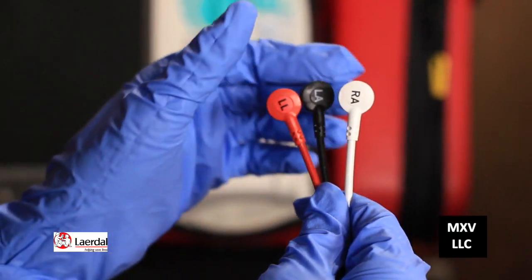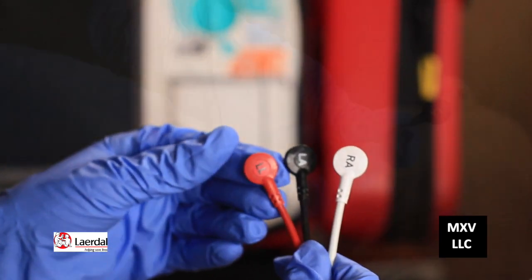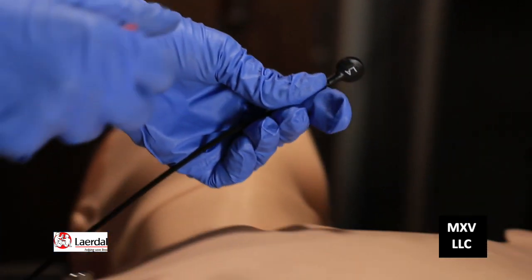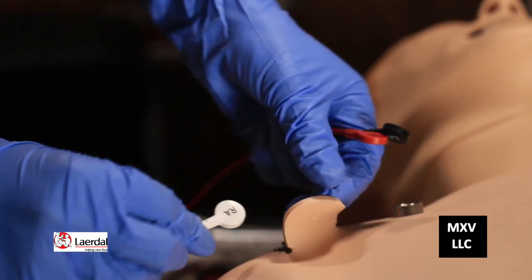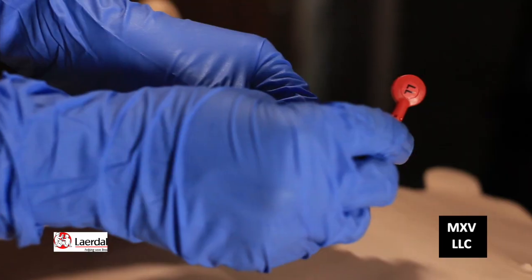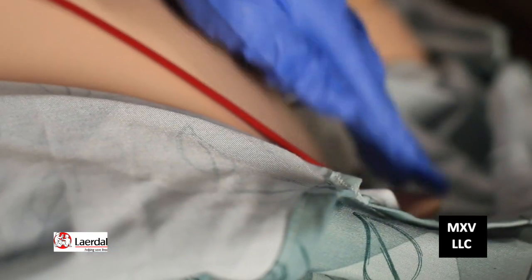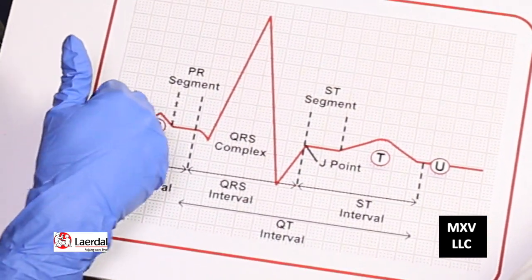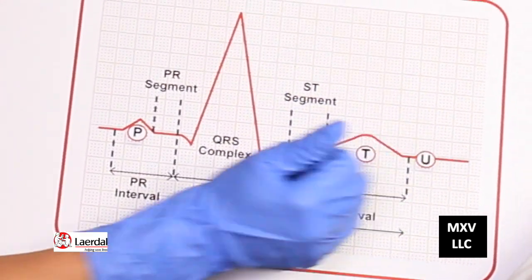There are three leads: white, black, and red. The black one is labeled LA for left arm and goes below the left clavicle. The white one is labeled RA for right arm and goes below the patient's right clavicle. The red one is labeled LL for left leg and goes to the left of the umbilicus. For today's scenario, a normal EKG is shown with a P wave, QRS complex, T wave, and U wave.